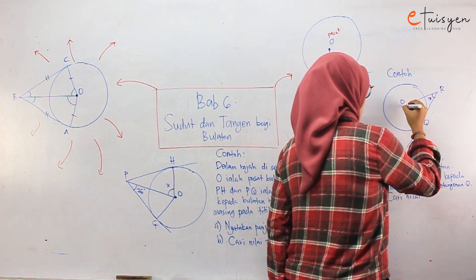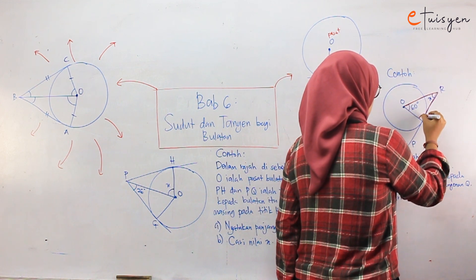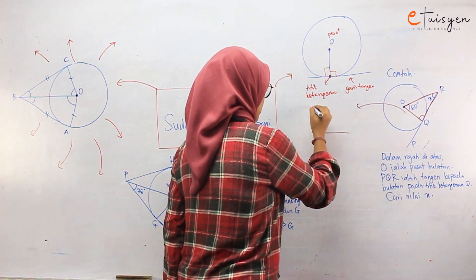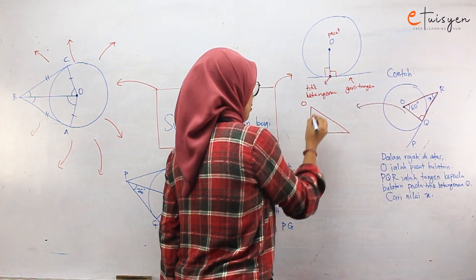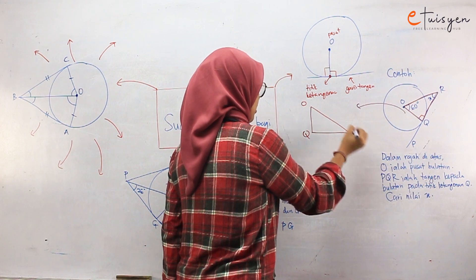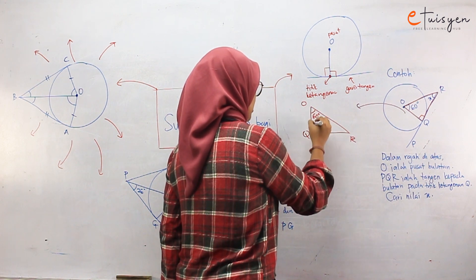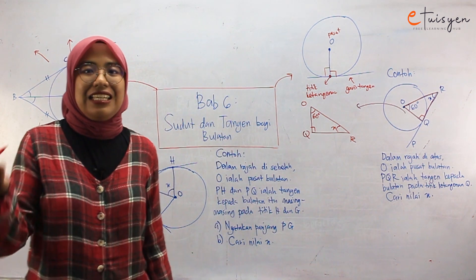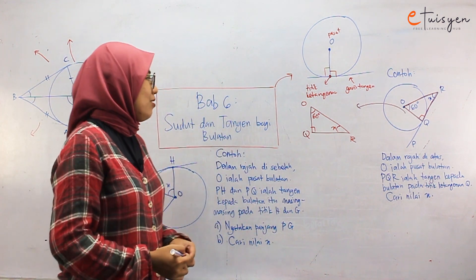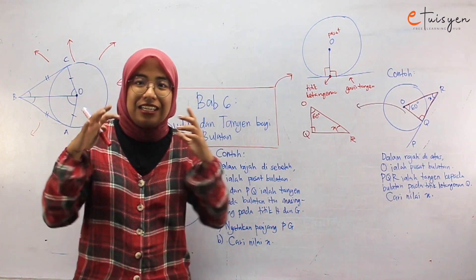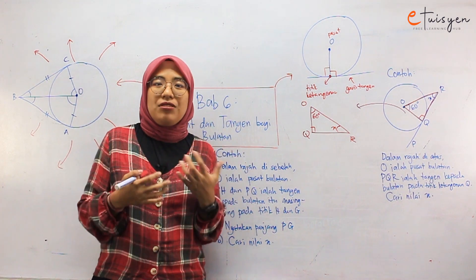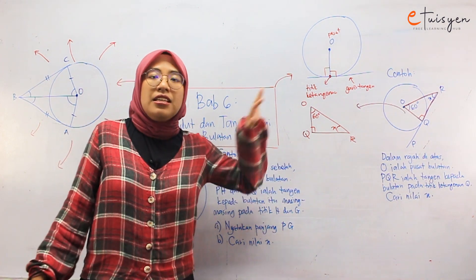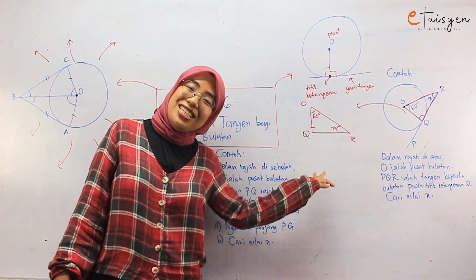Kalau korang perasan kat sini ada titik O, R, Q — so I keluarkan segi tiga. So sini O, sini Q, sini R. So sini 60 darjah, yang ni 90, yang ni X. Dan kalau korang perasan ini adalah segi tiga. So macam yang I cakap tadi korang kena ingat balik semua yang korang dah belajar — segi tiga sudut keseluruhan dia sentiasa 180 darjah.